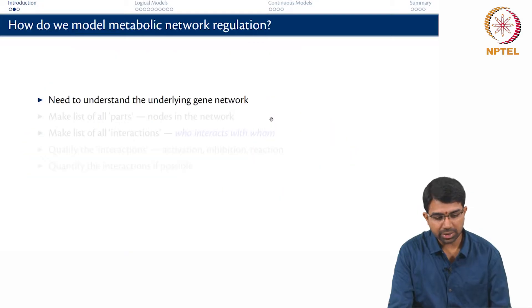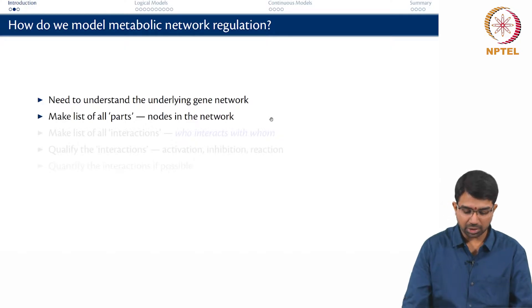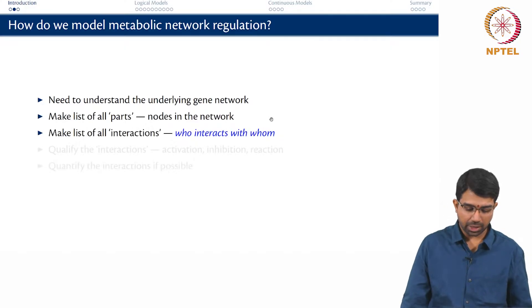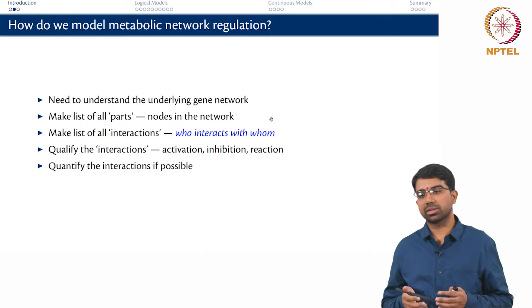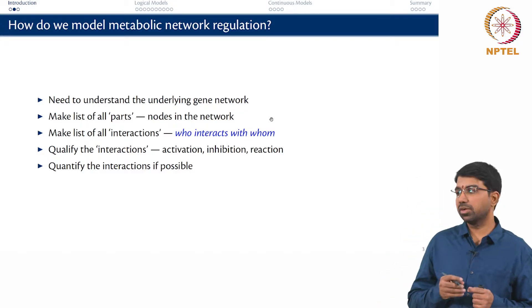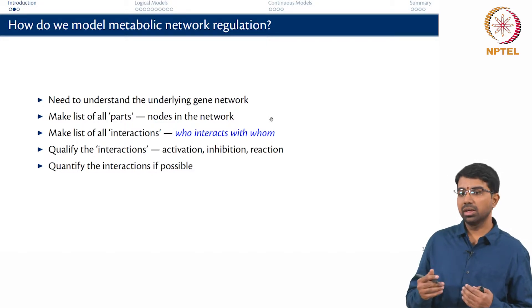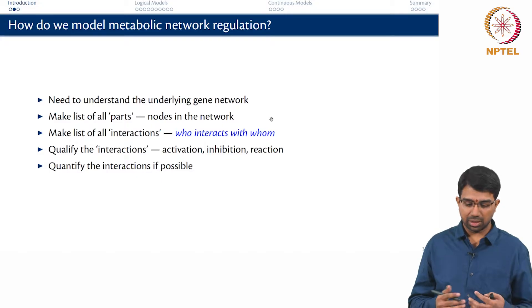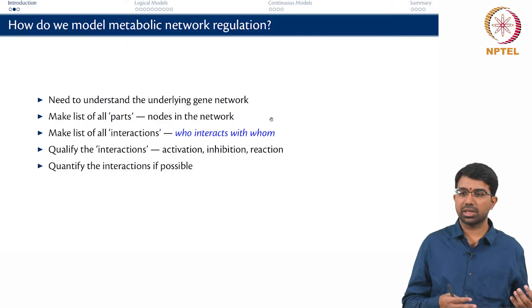So how do you model these kinds of systems? You need to first understand all the underlying parts. Make a list of all the parts of the network and make a list of all the interactions of the network and then qualify and if possible quantify the interactions. This is almost like filling out an adjacency matrix. If you just fill 1s and 0s, it is qualitative. If you can actually say this is 0.99 or minus 0.3, it will end up being quantitative and you have to reconstruct this from literature and from experiments.